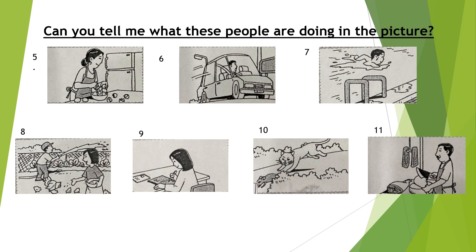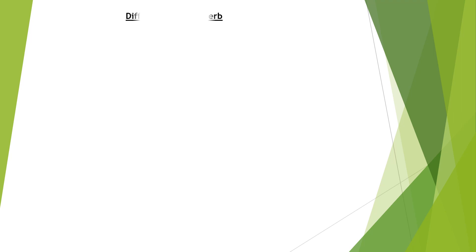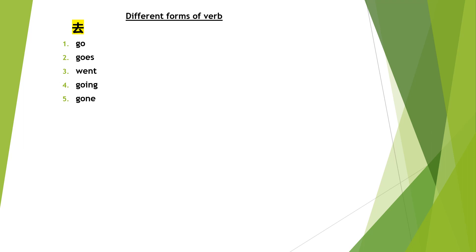Check your answers now. Different forms of verbs — in English, a verb can take different forms. Let me give you an example. The verb 'chi' (去) in Chinese: in English there is go, goes, went, going, and gone. All these verbs mean the same thing in Chinese.